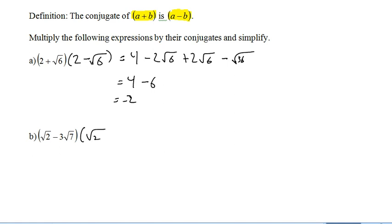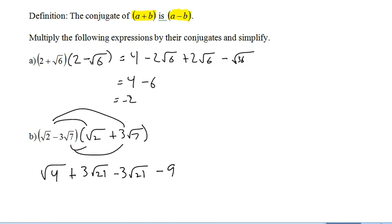Okay, this guy, if I multiply by root 2 plus 3 root 7, square roots are going to go away. So I end up with root 4 plus 3 root 21 minus 3 root 21 minus 9 root 49. So I get 2 minus 9 times 7 is 63 is negative 61.